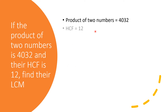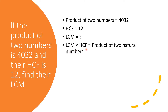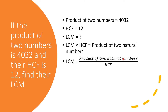We have to find LCM. Using the relation LCM × HCF = product of two natural numbers, we rearrange: LCM = product of two numbers ÷ HCF. Putting in the values: LCM = 4032 ÷ 12 = 336.